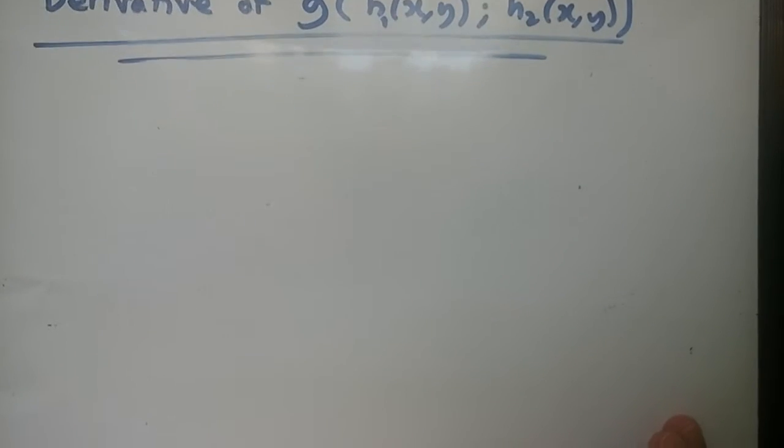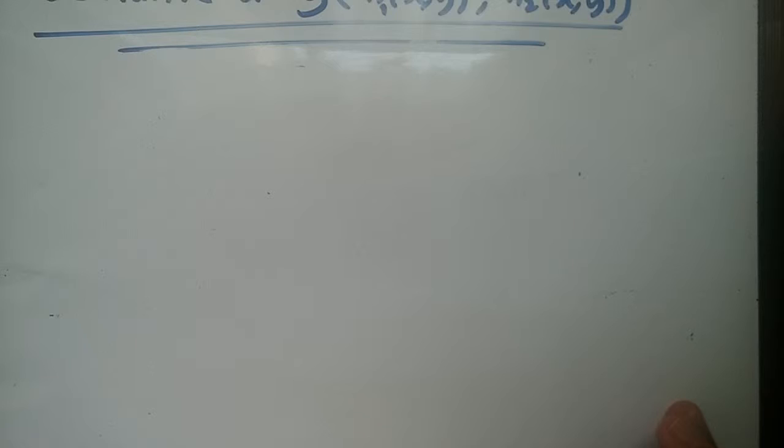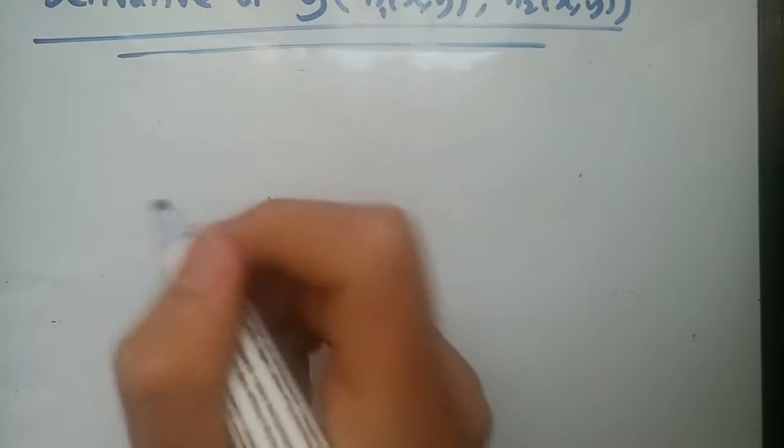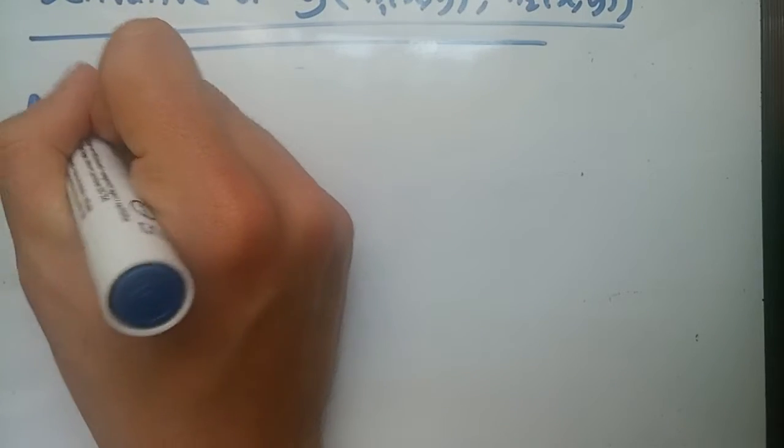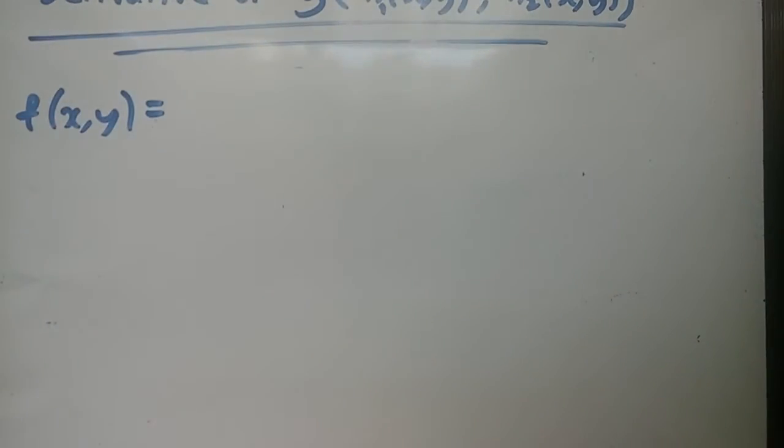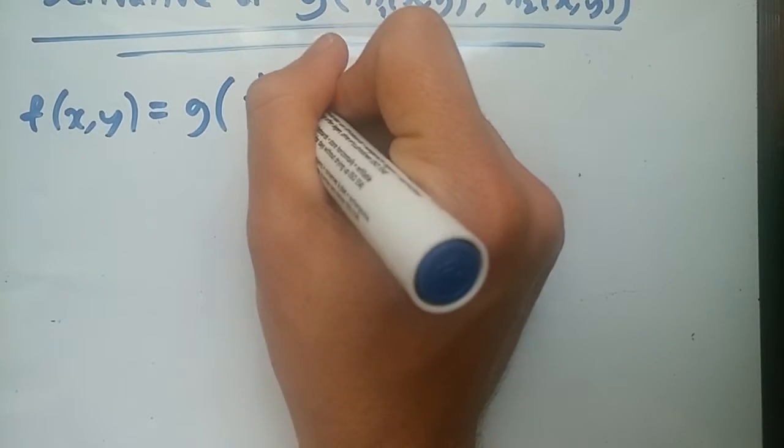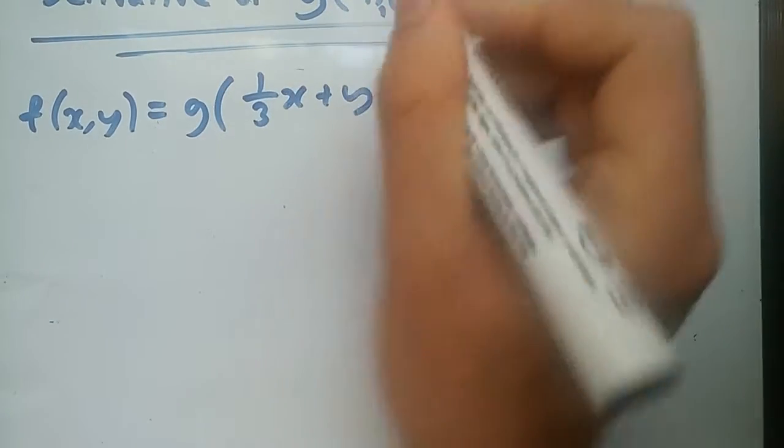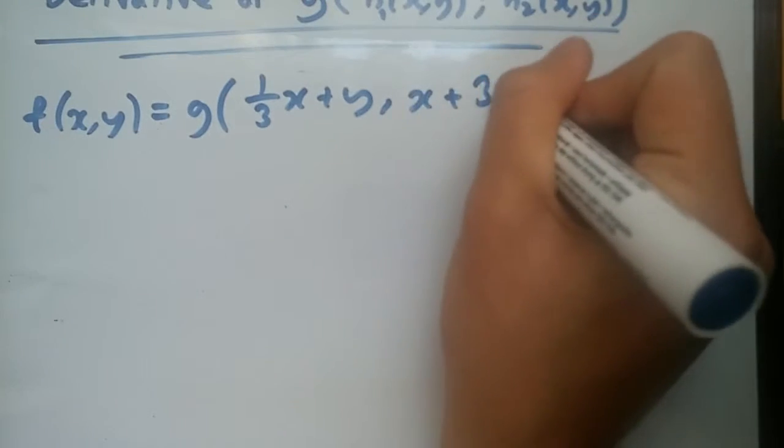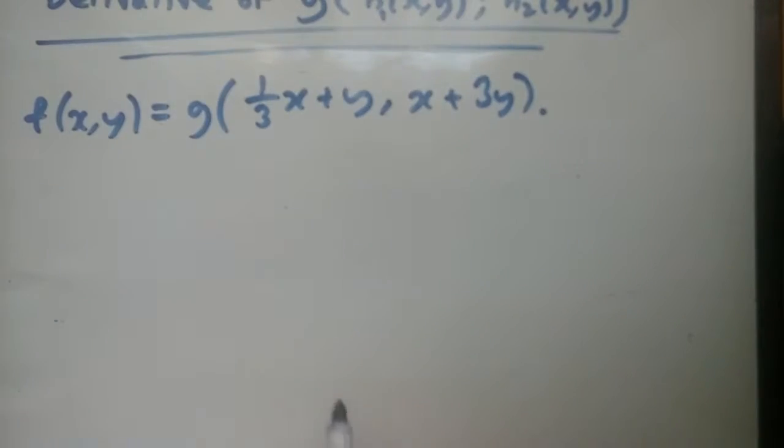This would just give you zero. So really the computation of this is just zero. Now you know how to take the derivative of this. Just to recap, you just have to really use the chain rule to bring out the term outside. Let's try a second example. I think a second example would be helpful.